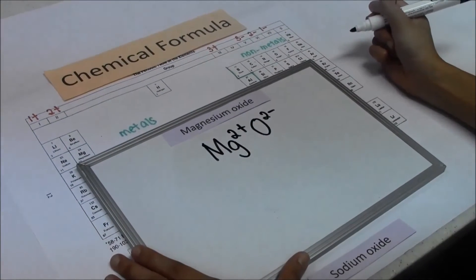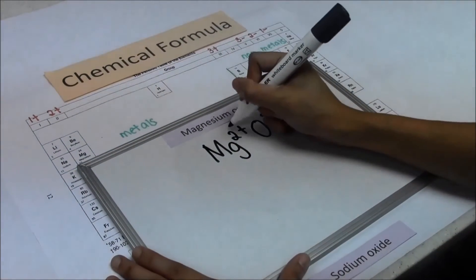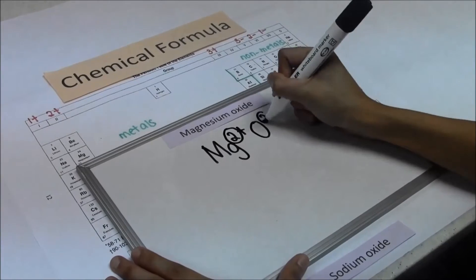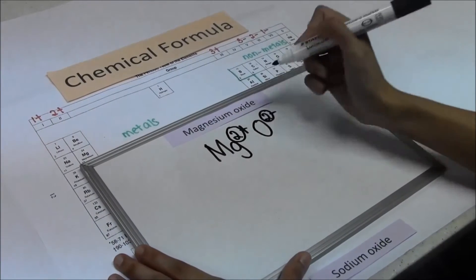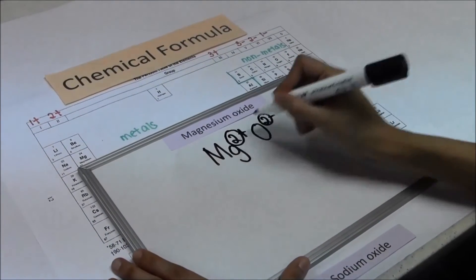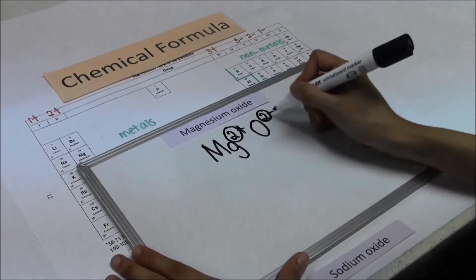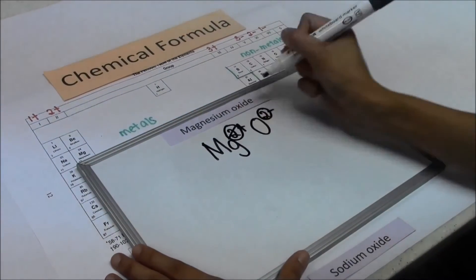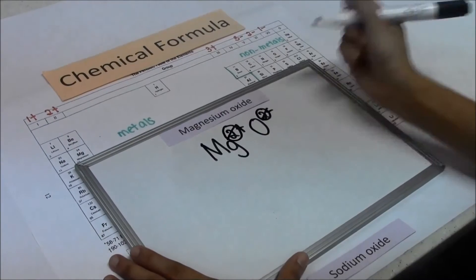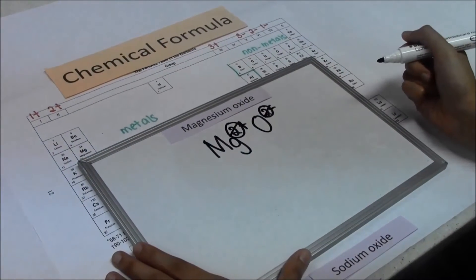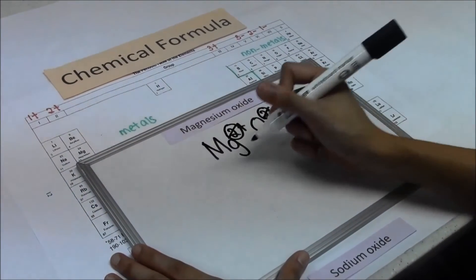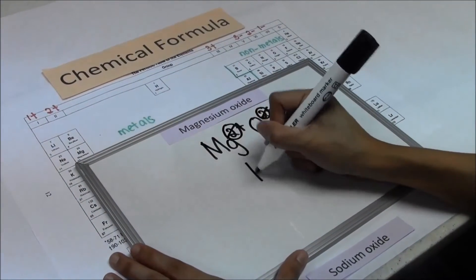Circle the number on the charge. The numbers are the same, so we can cancel. The chemical formula for magnesium oxide is MgO.